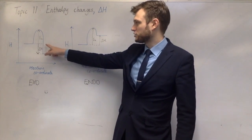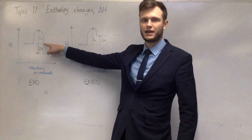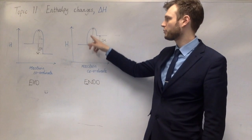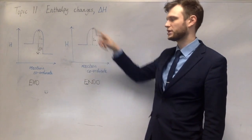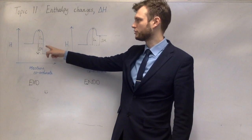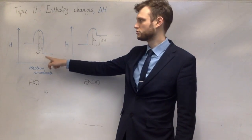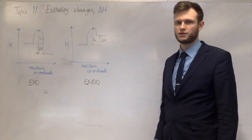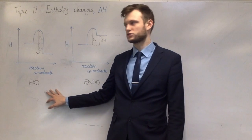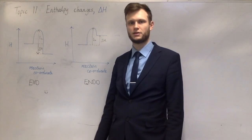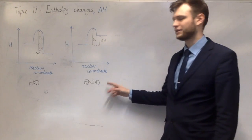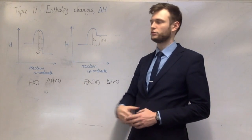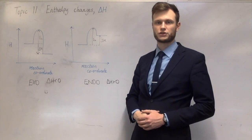The activation energy always goes from the reactants' enthalpy to the peak — and the same for an endothermic reaction, from the reactants to the peak. For an enthalpy change, the arrow always goes from the reactants to the products: down for an exothermic reaction and up for an endothermic reaction. So exothermic reactions have a negative enthalpy change and endothermic reactions have a positive enthalpy change. The activation energy is the minimum energy required for a reaction to take place.